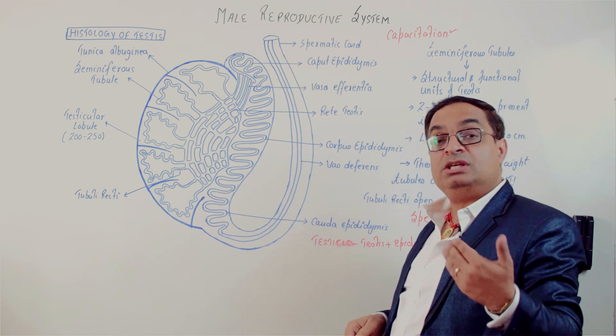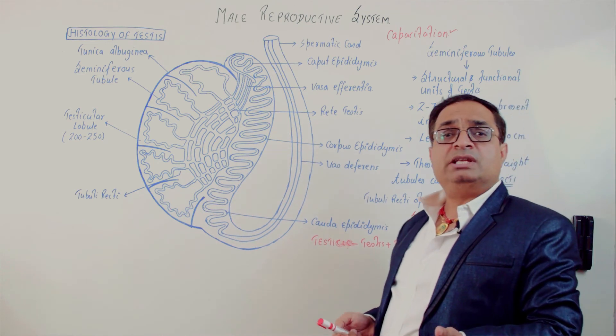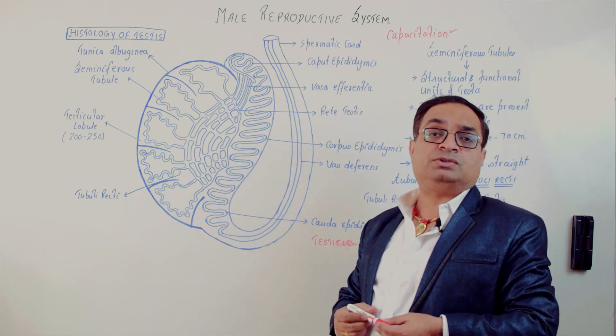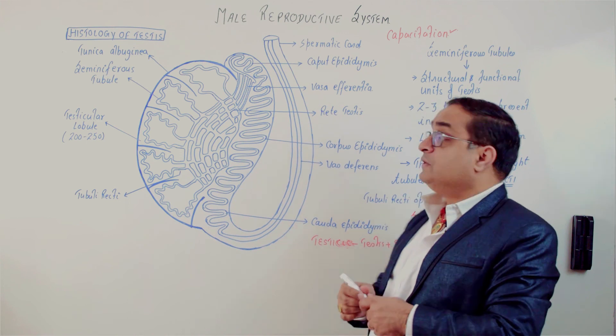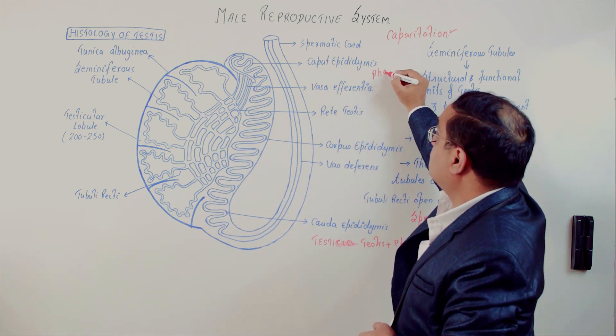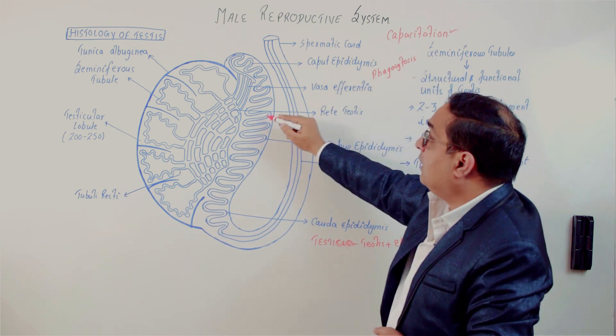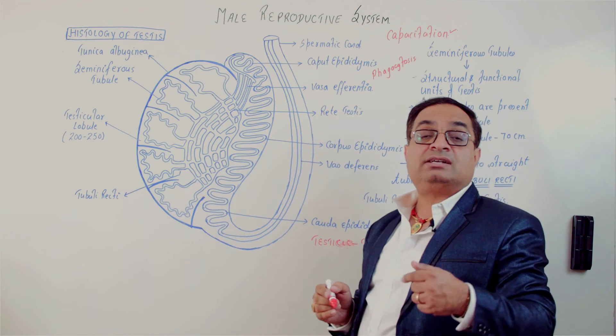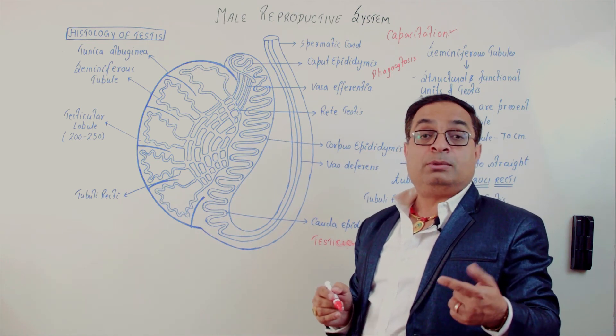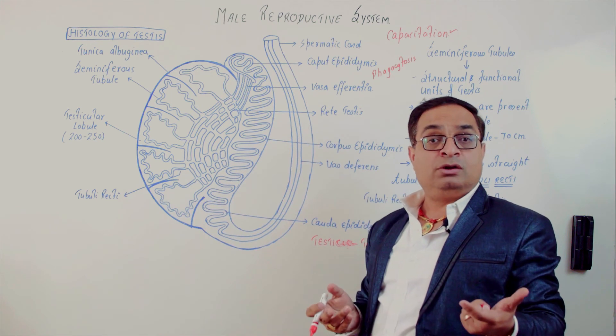Sperms are produced continuously. As I said, 1000 sperms per gram of testicular tissue in one second. So continuously they are undergoing phagocytosis also. Sperms are killed in the epididymis. So epididymis is a kind of recycling center because every time sperms are not ejaculated from the male body, so where they will go? They undergo continuous phagocytosis, means they are killed by the phagocytes inside the epididymis.